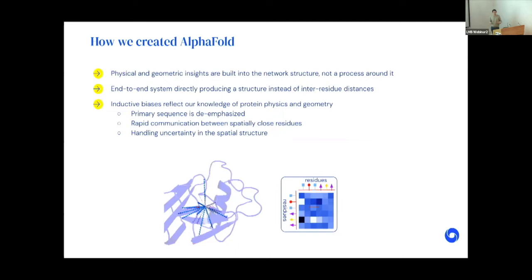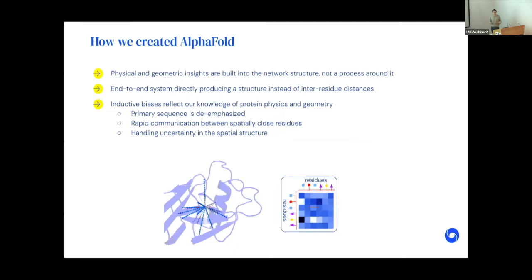The story of AlphaFold is how injecting our scientific understanding of protein physics, evolution, and geometry into the neural network design makes something dramatically more data-efficient. We have some principles. In AlphaFold 1, the common approach in the field was to build a complex protein system and drop an extremely standard neural network in the middle. That approach did help — it was the basis of state-of-the-art systems, including our first AlphaFold — but it didn't take us near where we needed to be.